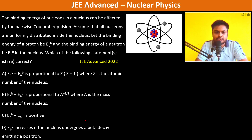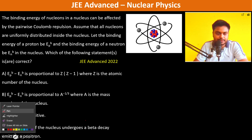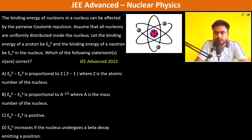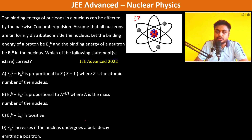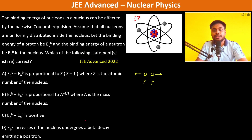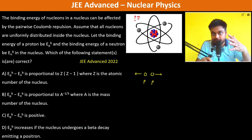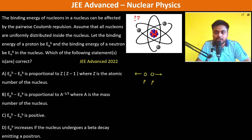The binding energy of nucleons in the nucleus can be affected by the pairwise Coulomb repulsion. In the nucleus there are protons and neutrons. Since proton-proton interactions involve repulsive force, it is easier to separate protons, and thus the binding energy of a proton will be lesser than that of neutrons.